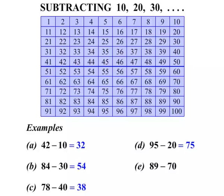89 minus 70. Let's start at 89. We're subtracting 70. Here we go. 10, 20, 30, 40, 50, 60, 70. So our answer there equals 19.